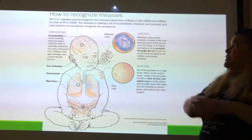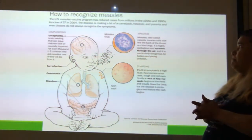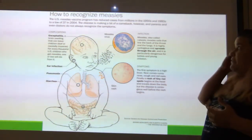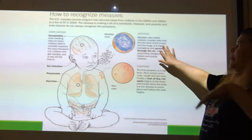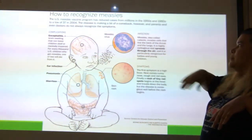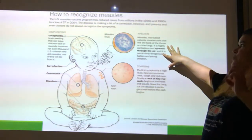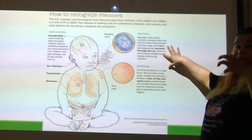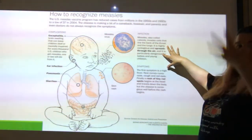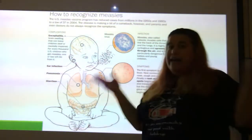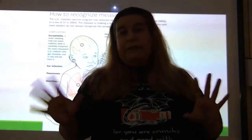This is the measles virus. As I said, it invades through breathing it in and then affects the throat and lungs. It is highly contagious and spreads through the air. If I had measles and was in a classroom with people, 15 people would get it.